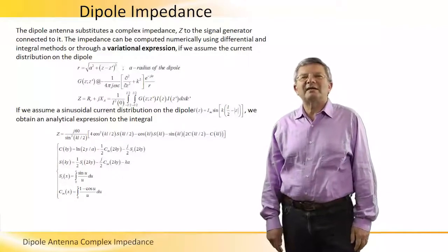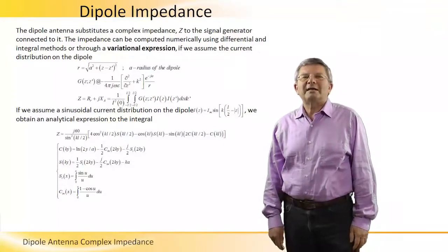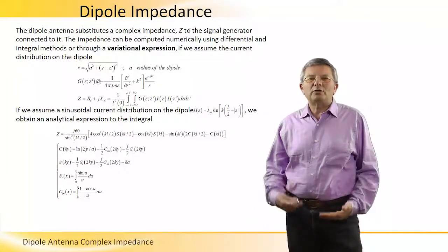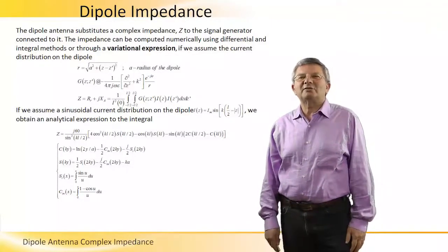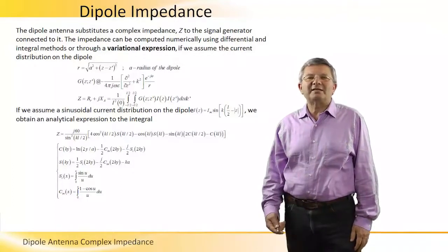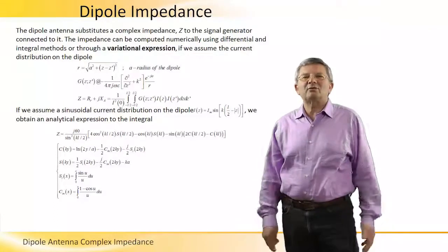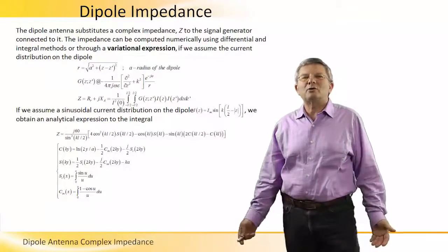We can understand the complex impedance by realizing that when we connect an antenna to a signal generator, since the radiated energy is lost, the signal generator feels that it's lost to some complex impedance.